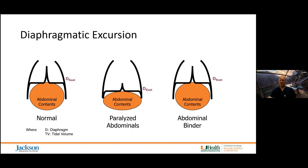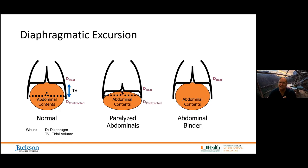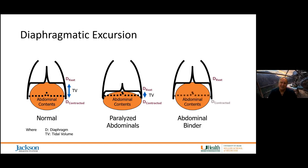Under normal circumstances, your abdominal muscles are holding your abdominal contents in and up against the diaphragm, such that when you contract your diaphragm, it generates a fairly nice tidal volume. However, if you have abdominal muscle paralysis, the abdominal contents are going to sit down and out. In that scenario, when you contract the diaphragm, because its resting length is so different, you're going to see very little tidal volume. Luckily, we have a miraculously engineered device called an abdominal binder. When applied appropriately, it squeezes the abdominal contents in and up against the diaphragm, restoring the resting length and subsequently restoring tidal volume.